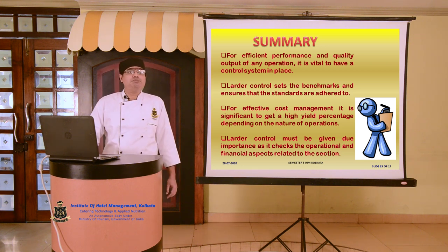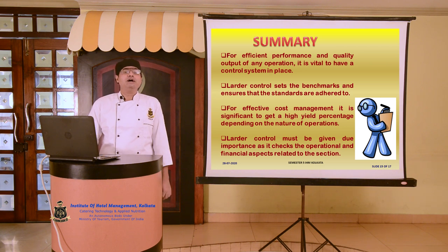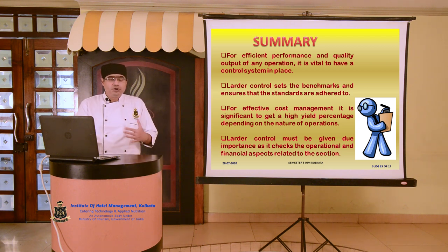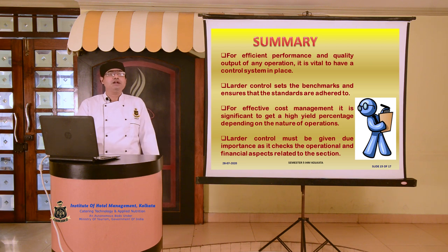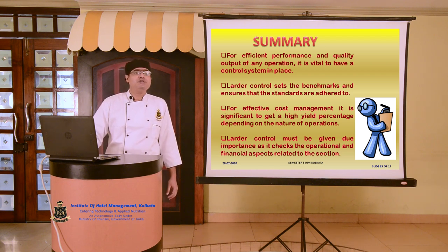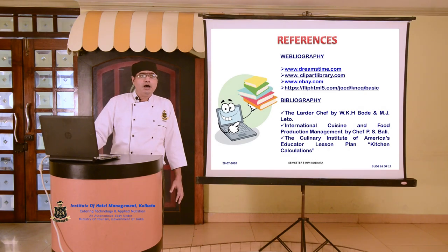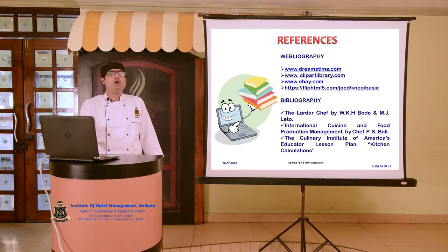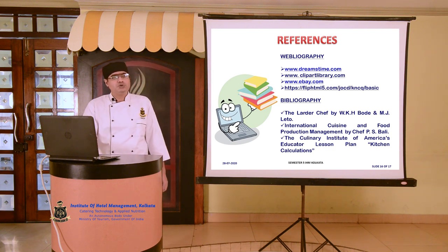Larder control must be given due importance as it checks the operational and financial aspects of the section. We maintain the records, the daily cost sheet, the daily ordering schedules, and we see what was procured and what output was generated for the day. When there is synergy, larder control is a great success and the food cost is maintained at the required optimum level. In our next session, we will go for a total summarized version of the larder chapter, combining all three parts and getting a better insight into the entire process — the larder's functioning, its control, and its layout.